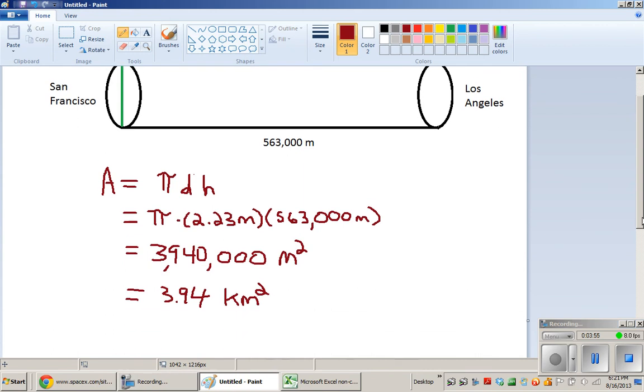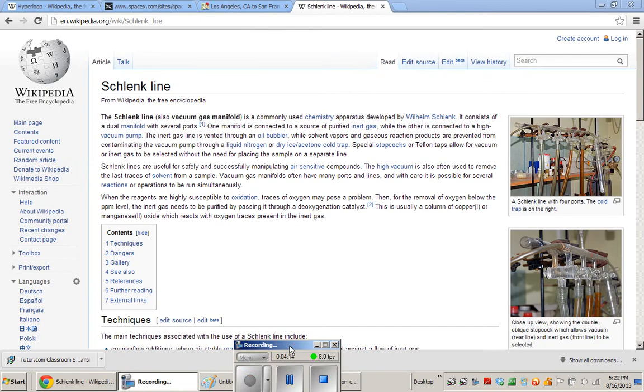So to give you some reference, I think what I'll do now is calculate the inner surface area of a Schlenk tube, which is a common chemistry apparatus that's used to remove atmosphere or gas from different vessels, different pieces of glassware. So this is the apparatus, the Wikipedia page for a vacuum gas manifold or what I call a Schlenk tube or a Schlenk line.